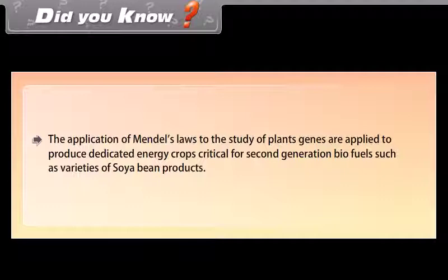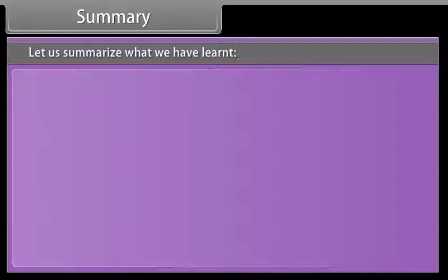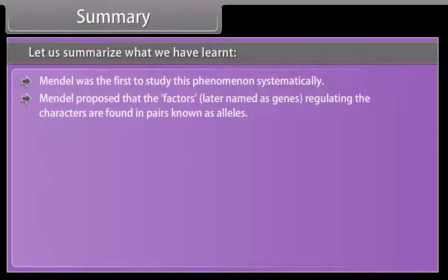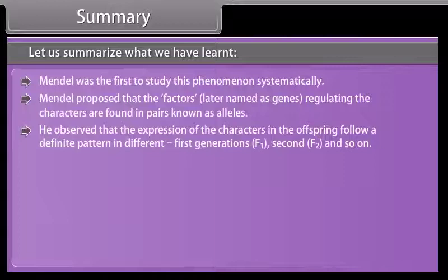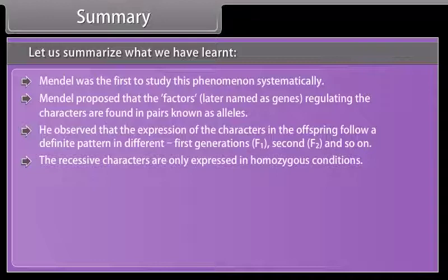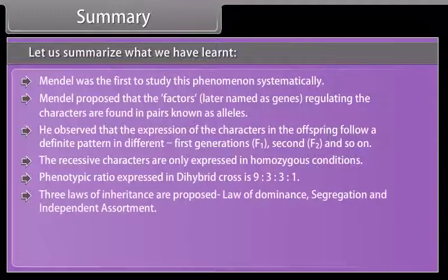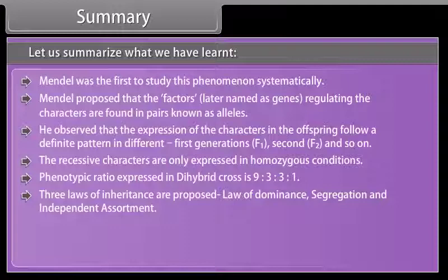Summary. Mendel was the first to study inheritance systematically. He proposed that factors — later named genes — regulating characters are found in pairs known as alleles. He observed that expression of characters in offspring follows a definite pattern across F1, F2, and subsequent generations. Recessive characters are only expressed in homozygous conditions. The phenotypic ratio in a dihybrid cross is 9:3:3:1. Three laws of inheritance are proposed: law of dominance, segregation, and independent assortment. Human blood groups have three alleles for one trait — A, B, O. Incomplete dominance occurs when neither allele for a trait is dominant.